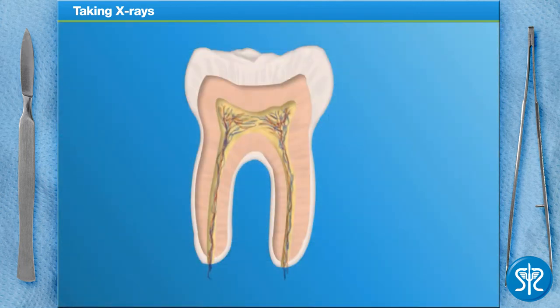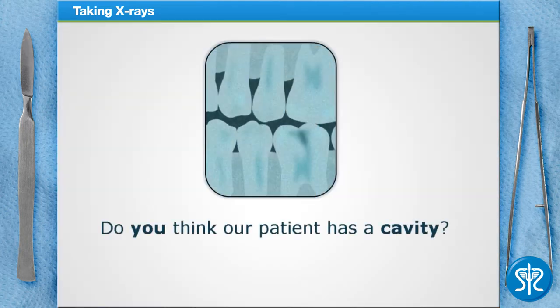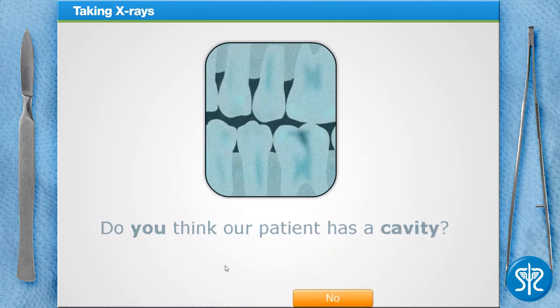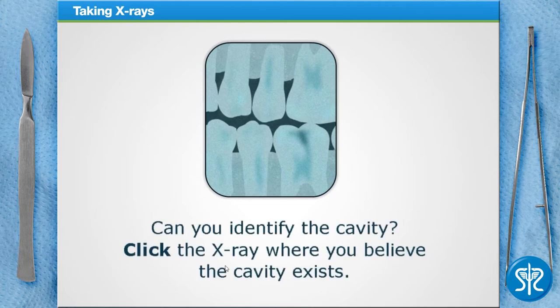When examining dental x-rays for cavities, look for hints of changes in the density of a tooth's enamel or dentin. These locations will appear as darkened areas on an x-ray. This is because the decayed portion of the tooth is less intact and the x-rays can penetrate that portion of the tooth. Do you think our patient has a cavity? I agree — can you identify it on the x-ray?